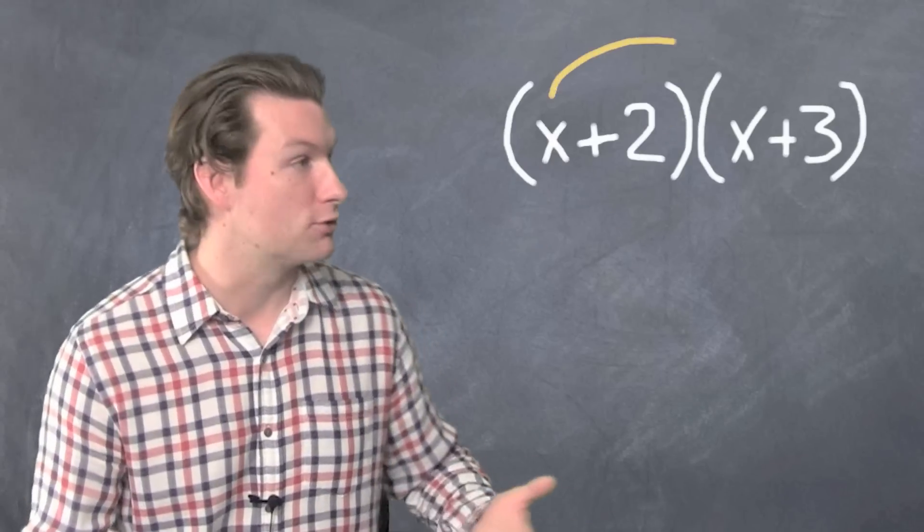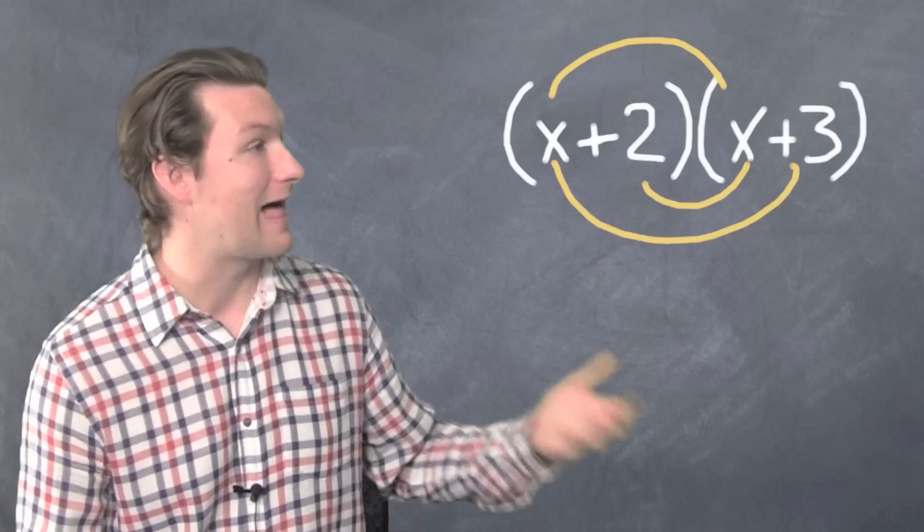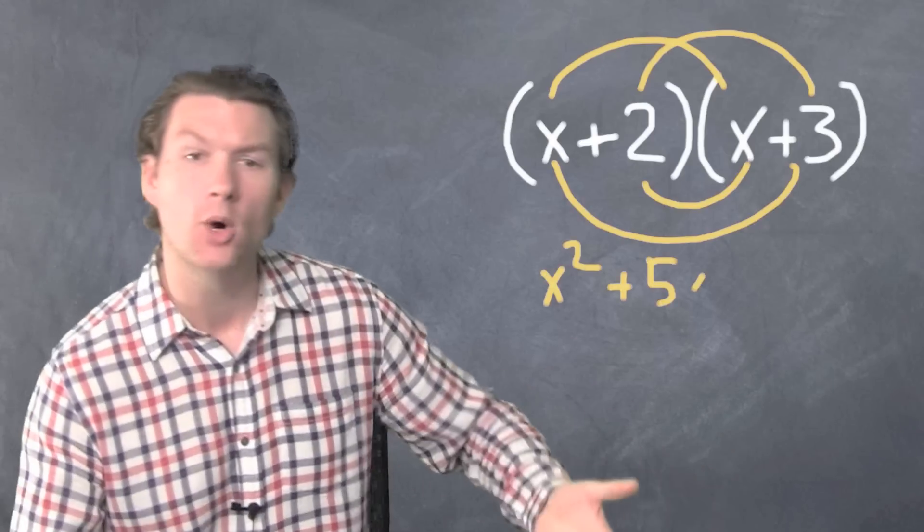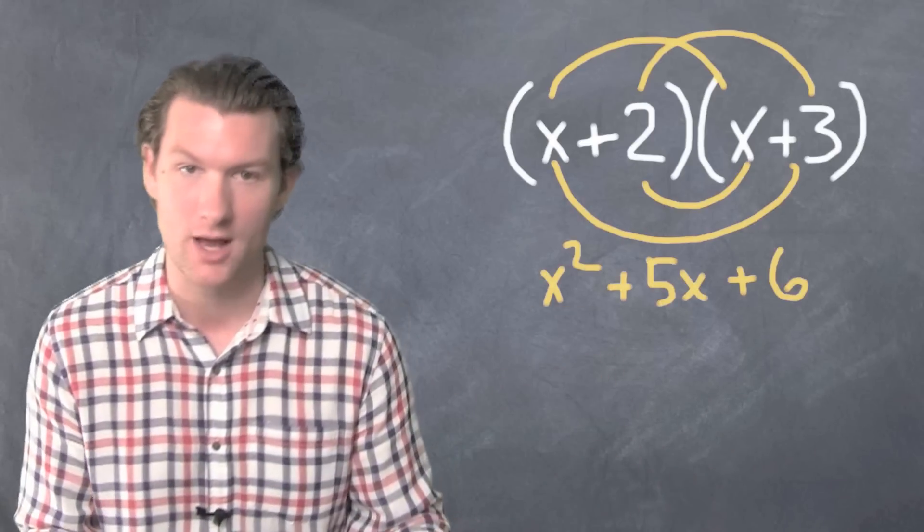Instead of foiling—first, outside, inside, last—which gives you some trinomial, we're going the opposite direction. Let me show you how we do it.